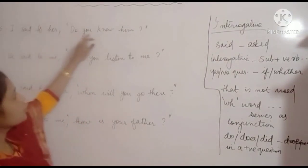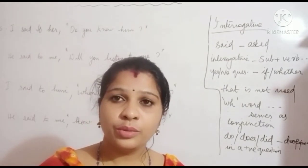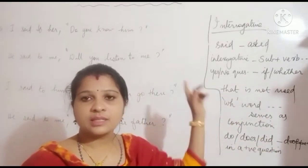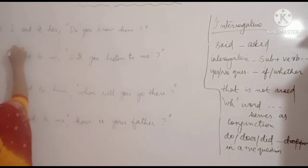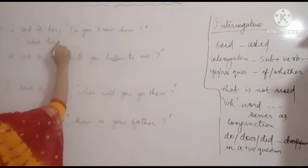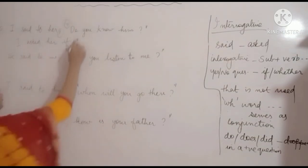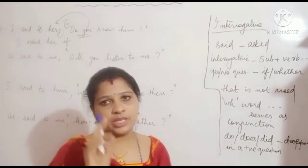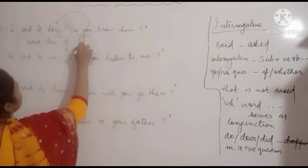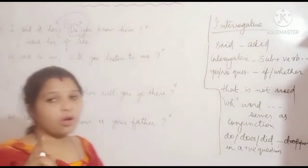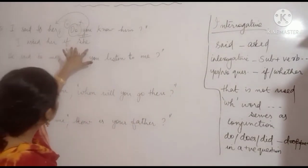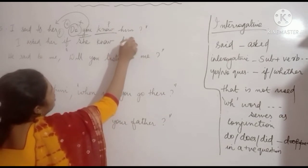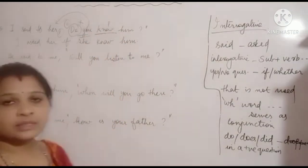Interrogative example 5: 'I said to her, do you know him?' 'Do' is in a positive question — we drop it. We write: I asked her if. 'You' changes according to object 'her' — feminine, so 'she'. 'Do' is removed. 'Know' is present tense, changes to past 'knew'. Answer: I asked her if she knew him.